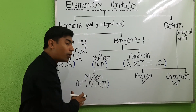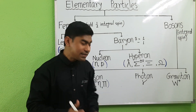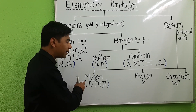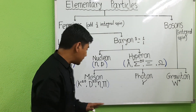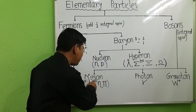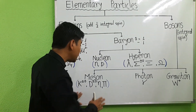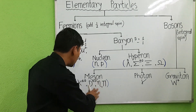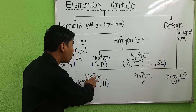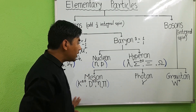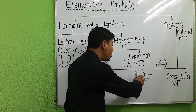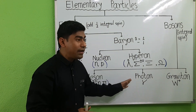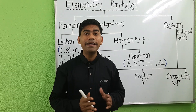Examples of mesons are: first is kaon (K plus, K minus, and K zero), D particle (D plus, D minus, and D zero), eta particle, and pi particle. The example of photon is the gamma particle, and they participate in electromagnetic interaction.